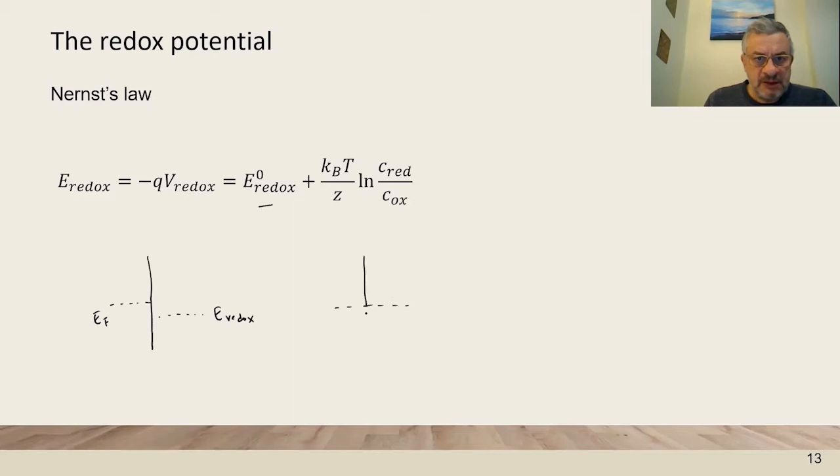In this case this happens by making here an interfacial layer which is called the Helmholtz layer so that there will be an equilibrium between the metal and the electrolyte.